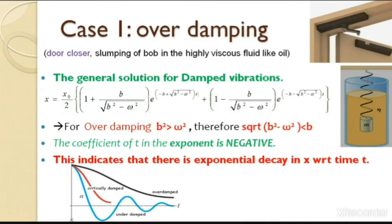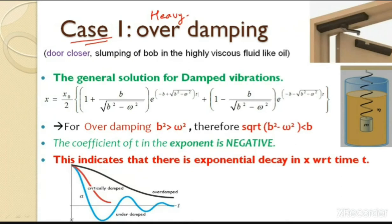Now for the theoretical part: the first case is over-damping, also called heavy damping. The example is door closers — when you push the door and simply walk away, the door slowly closes by itself without banging the wall. It comes and settles to its rest position without oscillating. The door closer provides additional damping; otherwise, the door would simply bang the frame.